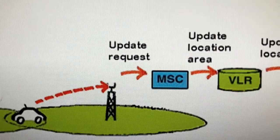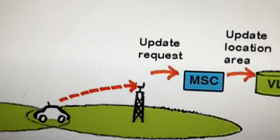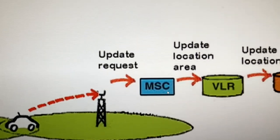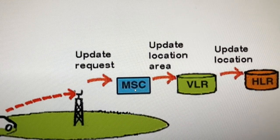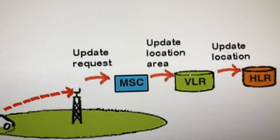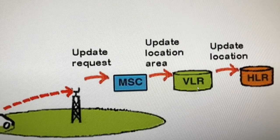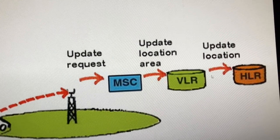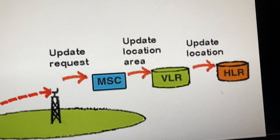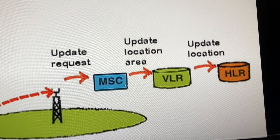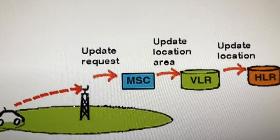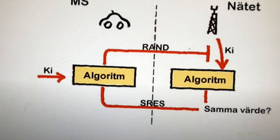This picture shows what happens when you turn on the phone. First there is a location update request to the mobile switching center (MSC), which sends an update location area request to the visitor location register (VLR), which in turn sends an update location request to the home location register (HLR). Then there is an acknowledgement going back and you can begin making phone calls.